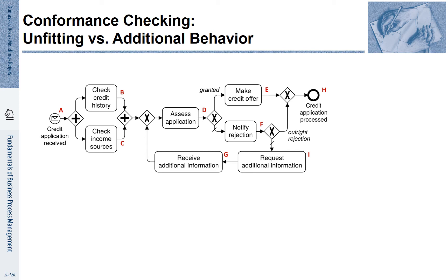If we notify about a rejection, there is a choice: either it is an outright rejection, or we can request additional information, referred to by the letter I. We still need to receive these additional pieces of information, an activity referred to by the letter G. In this way, we can close the loop and return to a new assessment of the application.